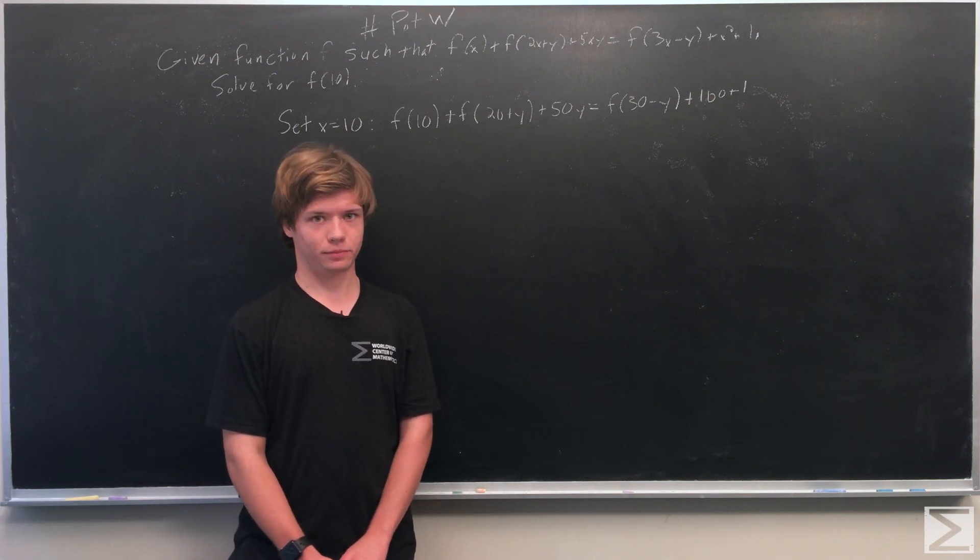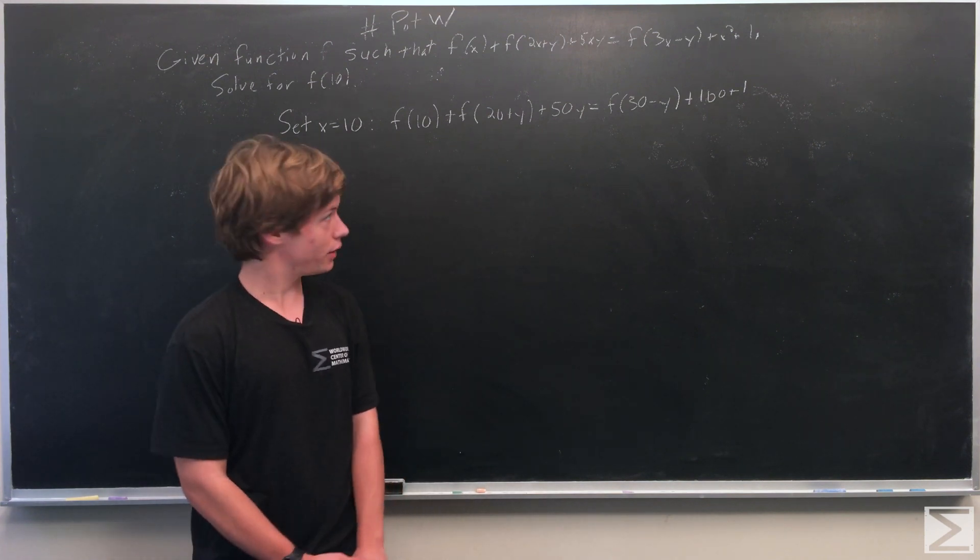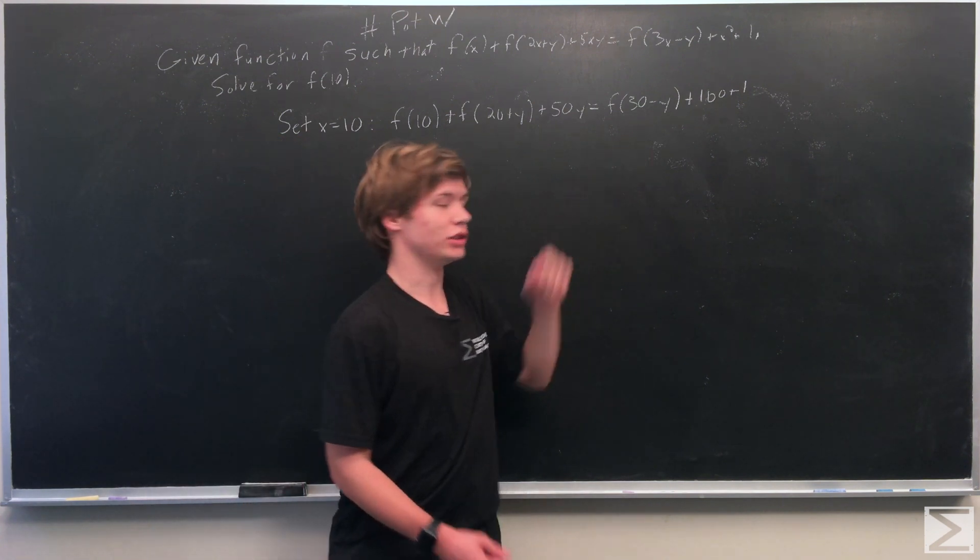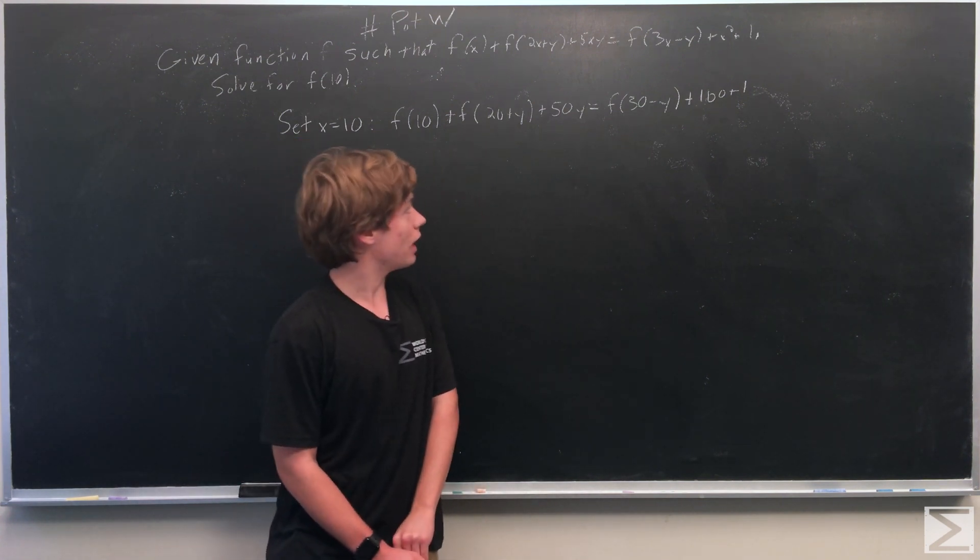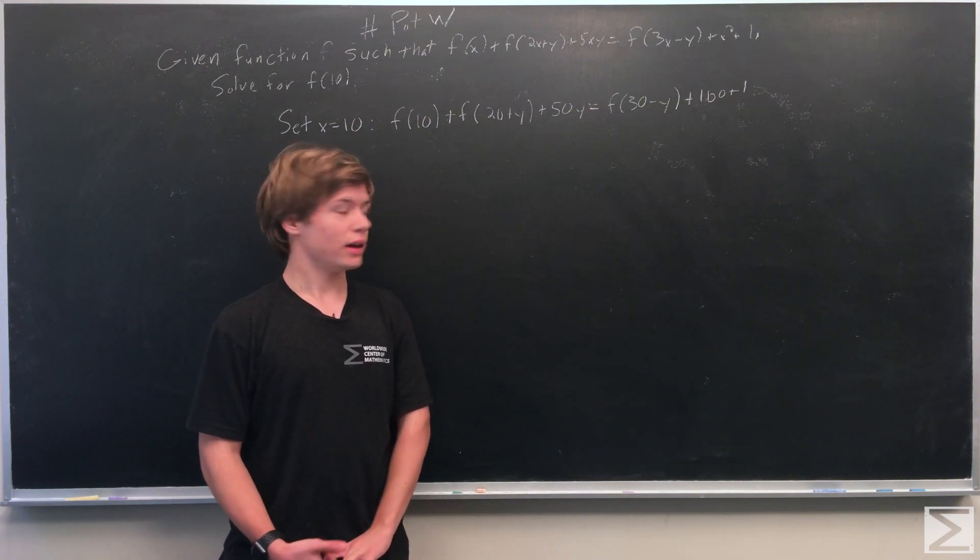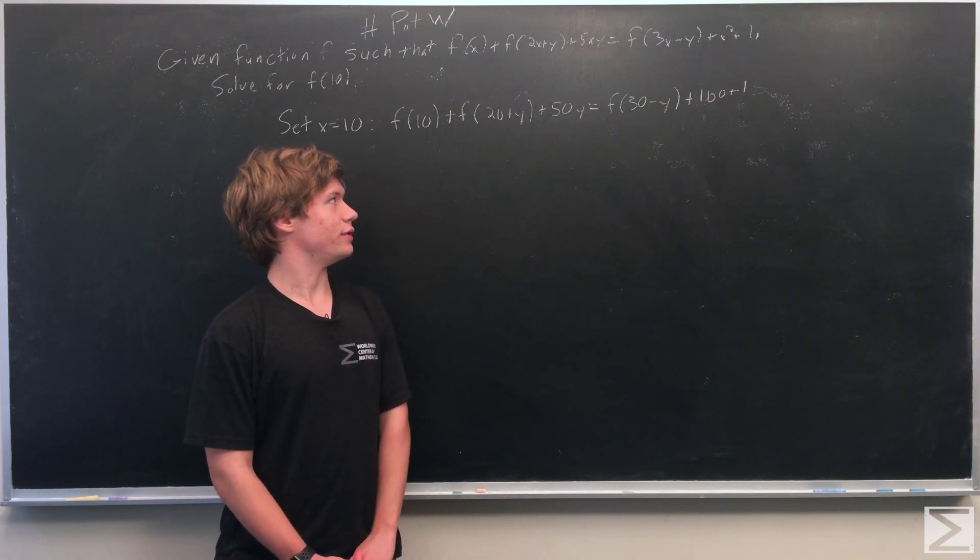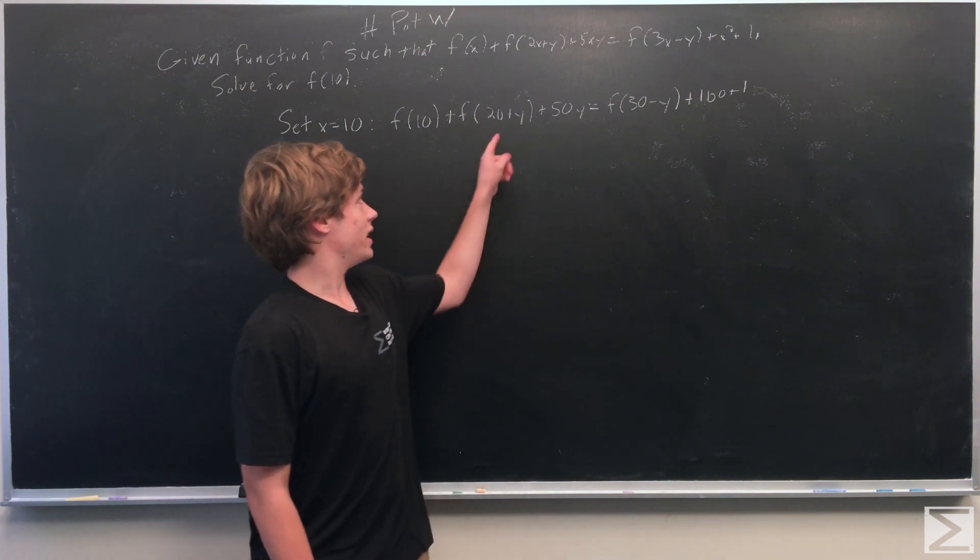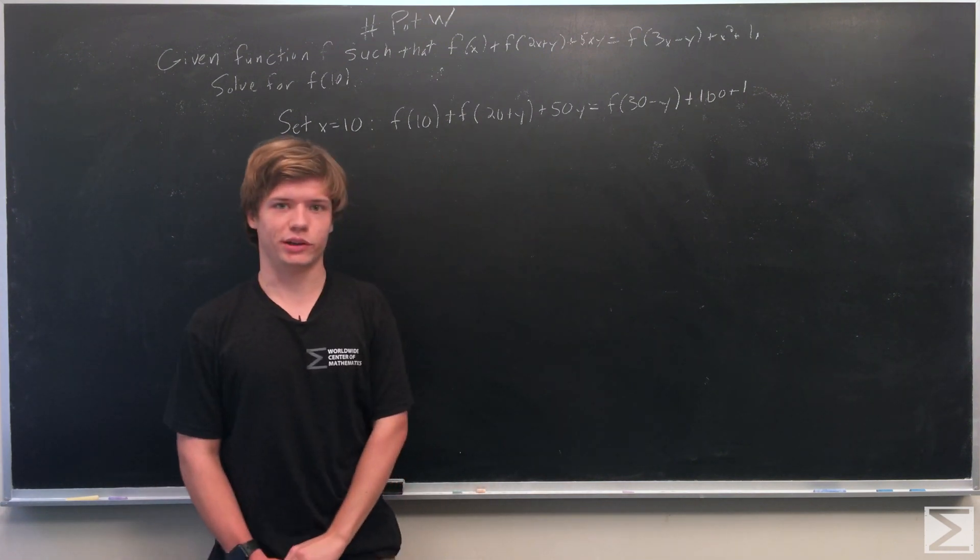And so now we see that we have f(20+y) on one side and f(30-y) on the other side. So a way that we can deal with this is to figure out what value of y would set these two equal to each other, so we can just cancel them out.